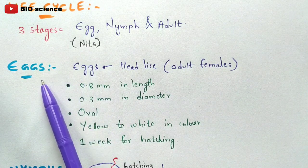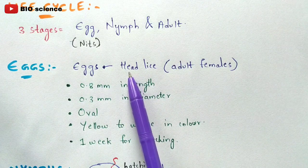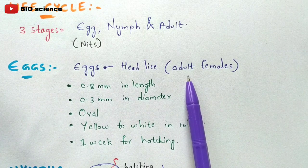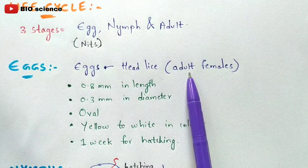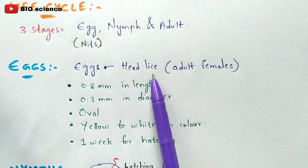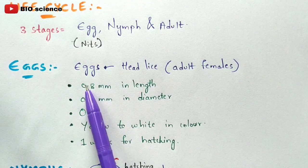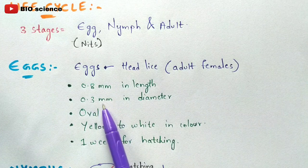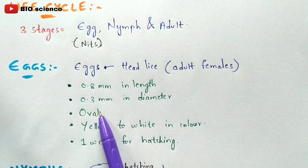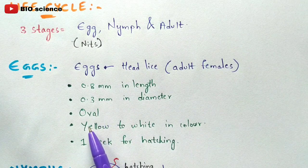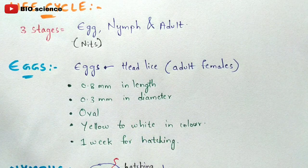The eggs are laid by adult female individuals. Coming to the size of those eggs: 0.8 mm in length and 0.3 mm in diameter. They are oval in shape and yellow to white in color.